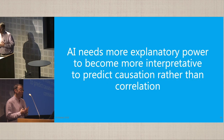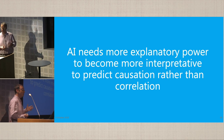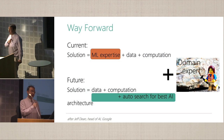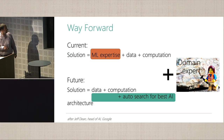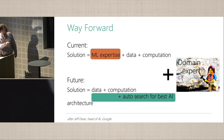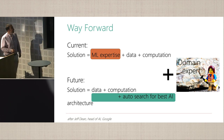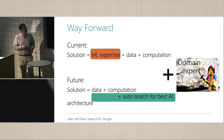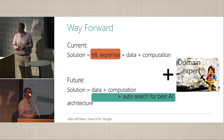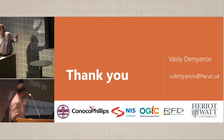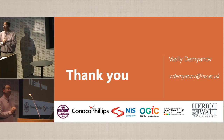The message I want to leave you with is that AI needs more explanatory power to become more interpretive — to predict causation rather than correlation. A lot of current work is done by correlation. This slide, borrowed from the head of AI at Google, shows the current state driven by expertise, data, and computation. What I see in this room today is a lot of domain expertise actively using machine learning, and I think that's very encouraging. Thank you, and thanks to all the companies which supported this research.